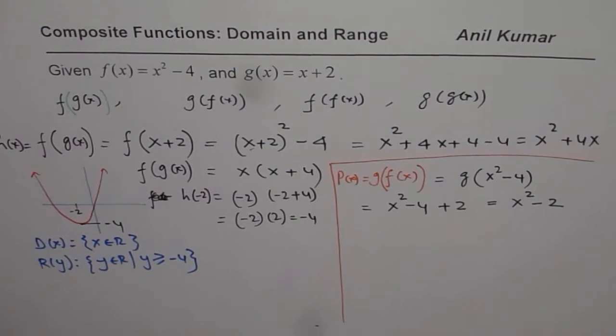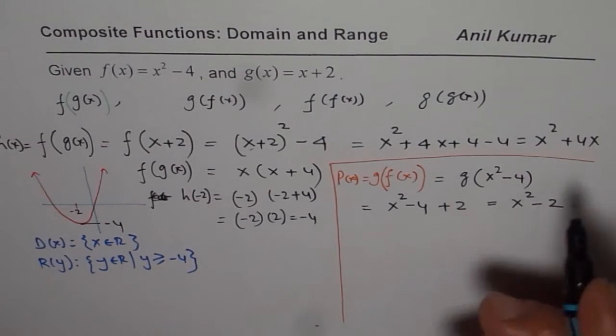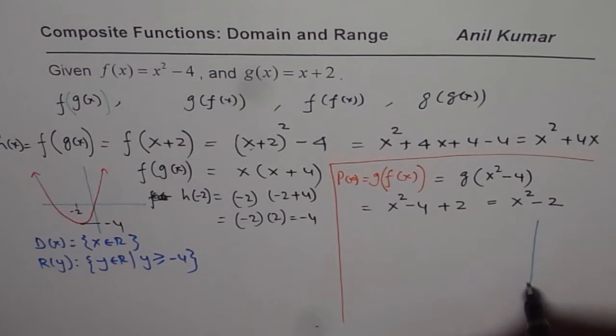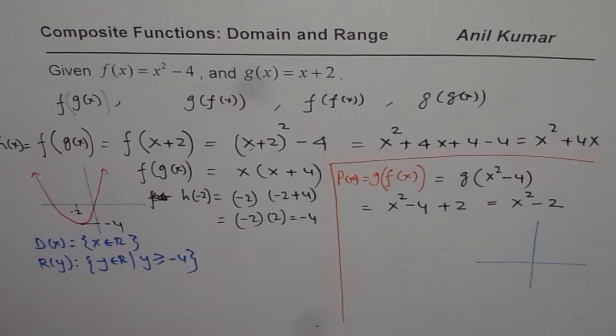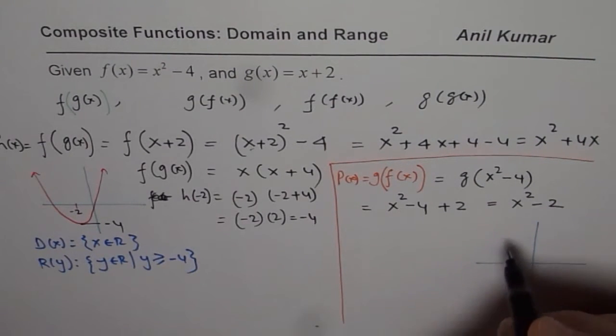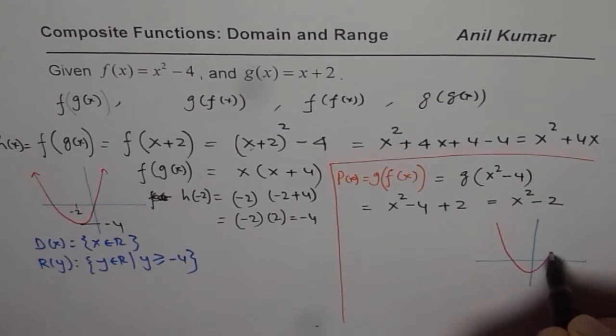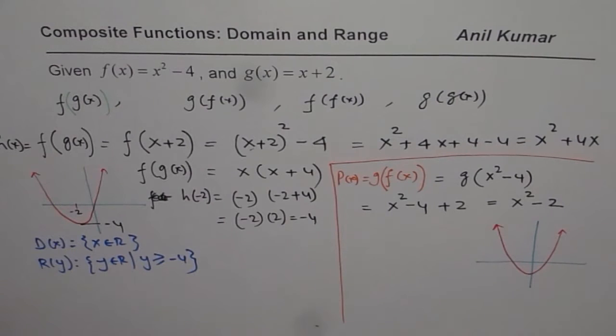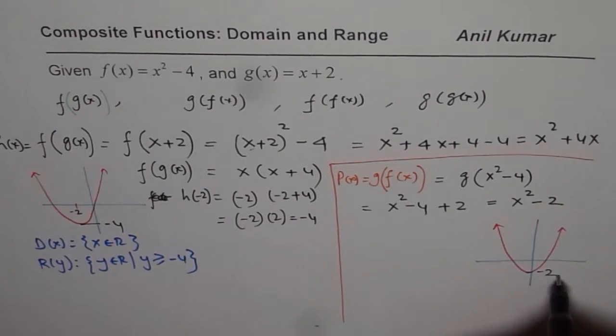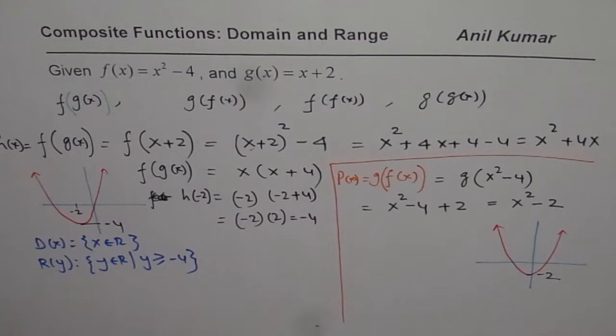Now x squared minus 2 you could graph and then write domain range. That will be a parabola shifted 2 units down. So I could sketch this function as a parabola which is shifted 2 units down. So that is minus 2.